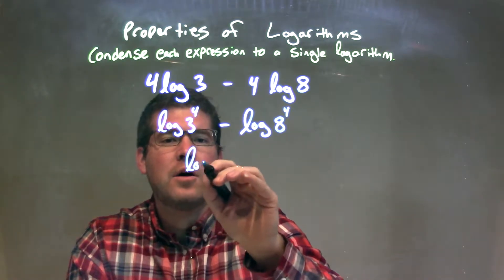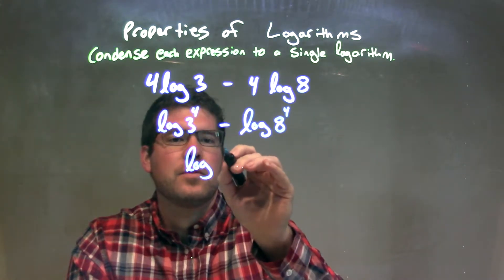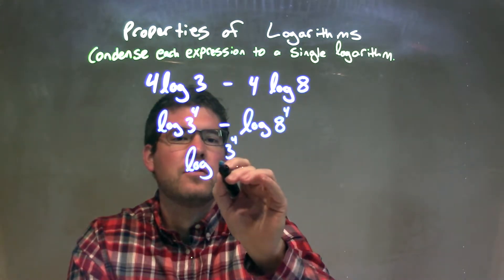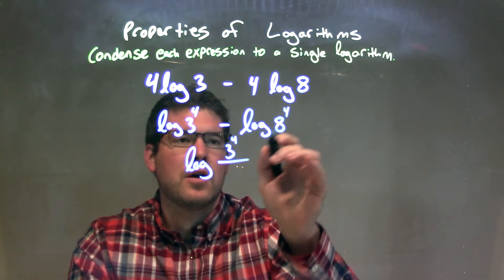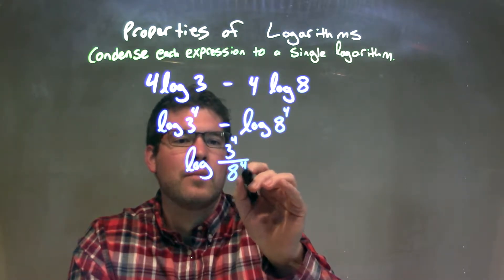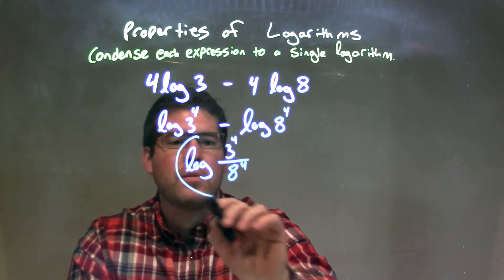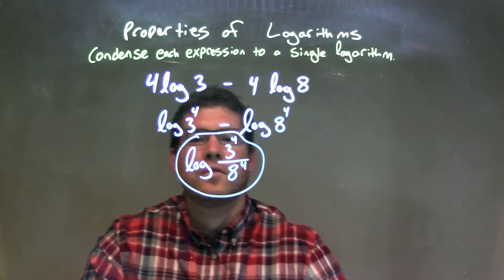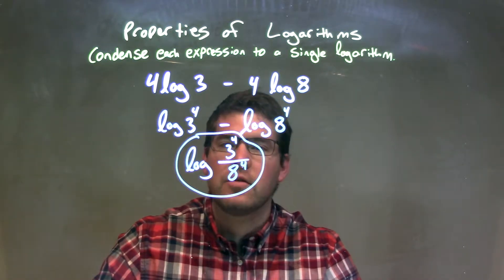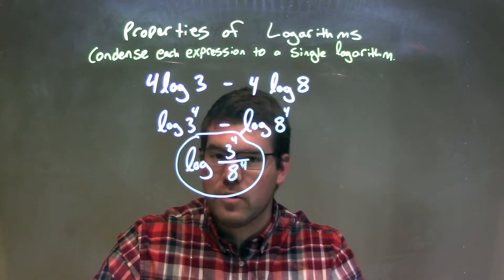So what we have right now is log of my first number here, 3^4, divided by the second number, 8^4, where we combine them. And that's it. We've simplified this as much as possible. So again, our final answer is log of 3^4 divided by 8^4.